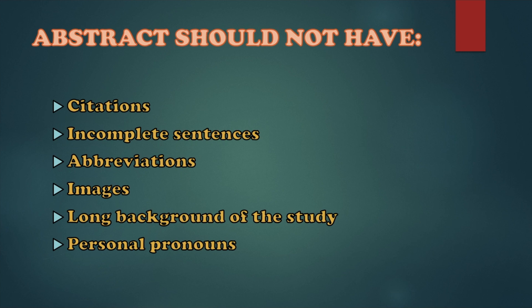Our abstract should not have the following: citations from our review of related literature and studies. All in-text citations must appear only in Chapter 2, and all reference lists must be only in the bibliography section. We must not have incomplete sentences. We should not overuse abbreviations. We should not have images, graphs, or illustrations. It is also not appropriate to include a very long background of the study — otherwise, we are already writing Chapter 1. Keep the background very short, followed by the objective of the study.